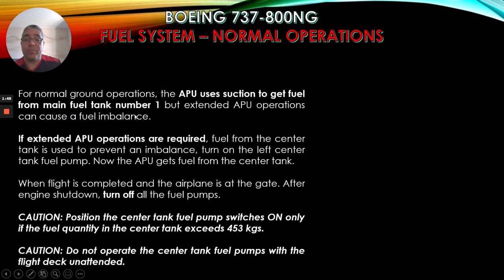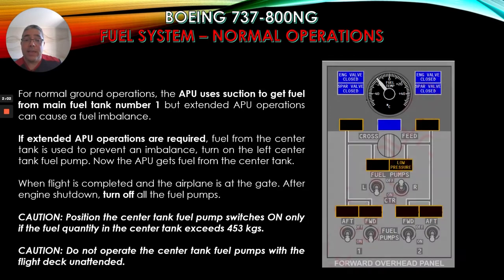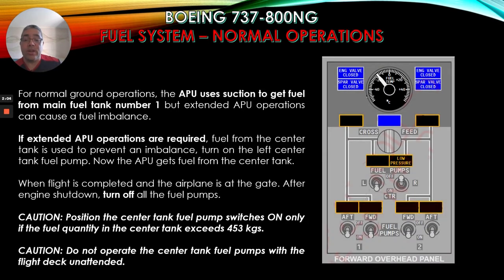For normal ground operations, the APU uses suction to get fuel from main fuel tank number one, but extended APU operations can cause a fuel imbalance. If extended APU operations are required, fuel from the center tank is used to prevent any imbalance. Turn on the left center tank fuel pump - in this case it is on. Now the APU gets fuel from the center tank.